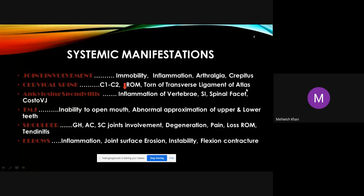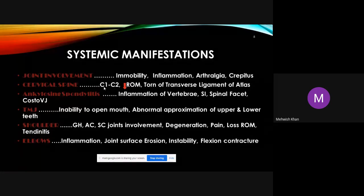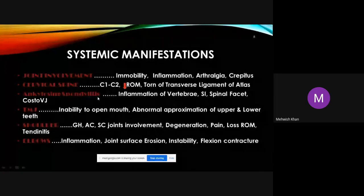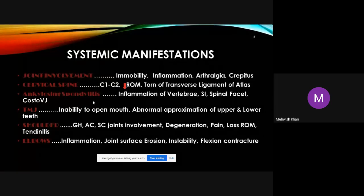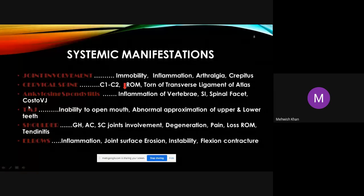There are risks of tearing of the transverse ligament of the atlas, which can be lethal, requiring careful management. Ankylosing spondylitis — inflammation of the vertebrae, SI joint, sacral joint, and posterior vertebral joints — can occur, eventually leading to bony fusion, leaving the patient completely unable to perform physical activity and causing secondary complications like muscular contractures and muscle weakness.